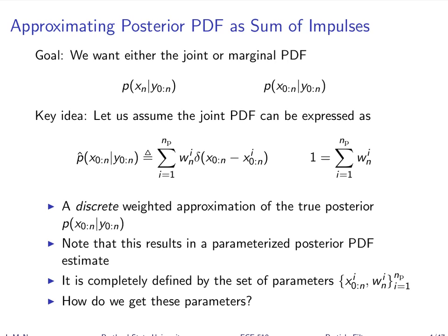One thing I realized in preparing for today's lecture is that the notation becomes really cumbersome because there are so many things to index at different times, and it's inevitable that I'll end up overloading it sometimes. My notation is different than a lot of the references I've provided. I've overloaded n: when it's a subscript it always denotes the time index — the independent variable driving the state dynamics — but I also use lowercase n to denote the number of things, such as the number of particles or the number of effective particles.